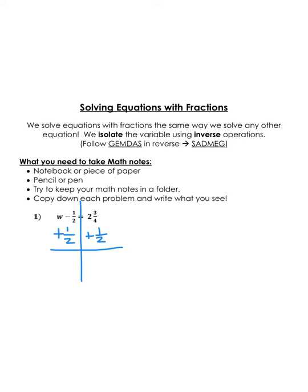Now, because we have opposites, we can zero out, and all we're left with on the left side is the W. Now, on the right side, we need to use our knowledge of fractions, and we need to add these two fractions together. So let's go through the process.